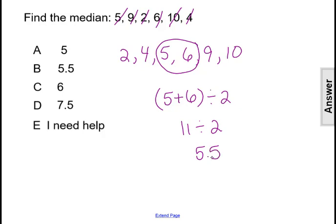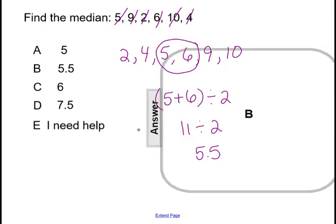So since 5.5 is the mean of 5 and 6, the two numbers that are in the middle of your data, 5.5 is then the median of the data, making our answer choice B.